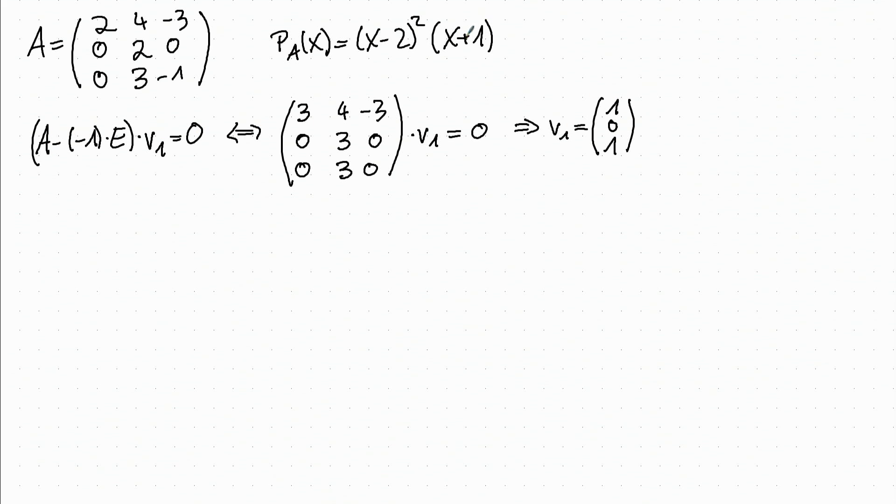Since the algebraic multiplicity of this eigenvalue is 1, the geometric multiplicity has to be also 1. So this is the only eigenvector for the eigenvalue minus 1, and we continue with the second eigenvalue.